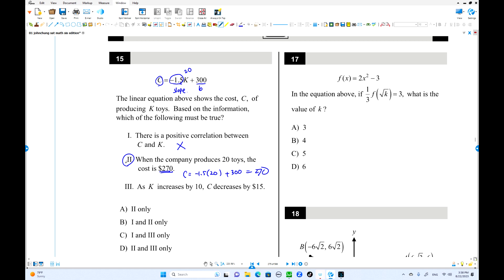As K increases by 10, C decreases 15. That is the slope. Delta C over Delta K. That equals negative 1.5. The slope. K increase by 10. This is increase by 10. C is what? Multiply both sides. Delta C is negative 15. That's true. Decreases 15. So 2 and 3. True. Choice D.